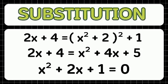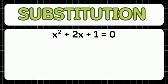For the third step, we will arrange the equation to bring all terms to one side. So the equation will be x squared plus 2x plus 1 equals 0.